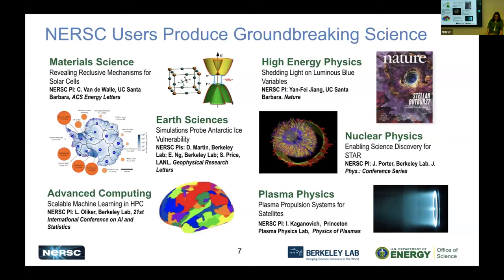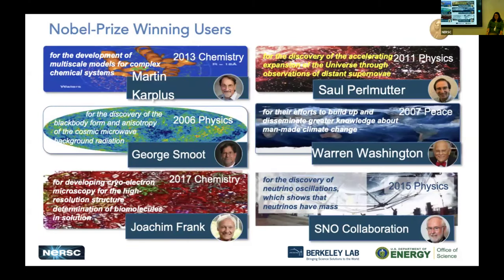Our users are amazing folks who produce groundbreaking science across a wide variety of interesting areas. We're also really proud of our Nobel Prize winners — we have been associated with six Nobel prizes. One notable winner is Saul Perlmutter, who is in the upper right — you may notice that our supercomputer is named Perlmutter, after him. We name all of our machines after brain scientists, and we actually asked him if we could name our machine after him, and he said yes.